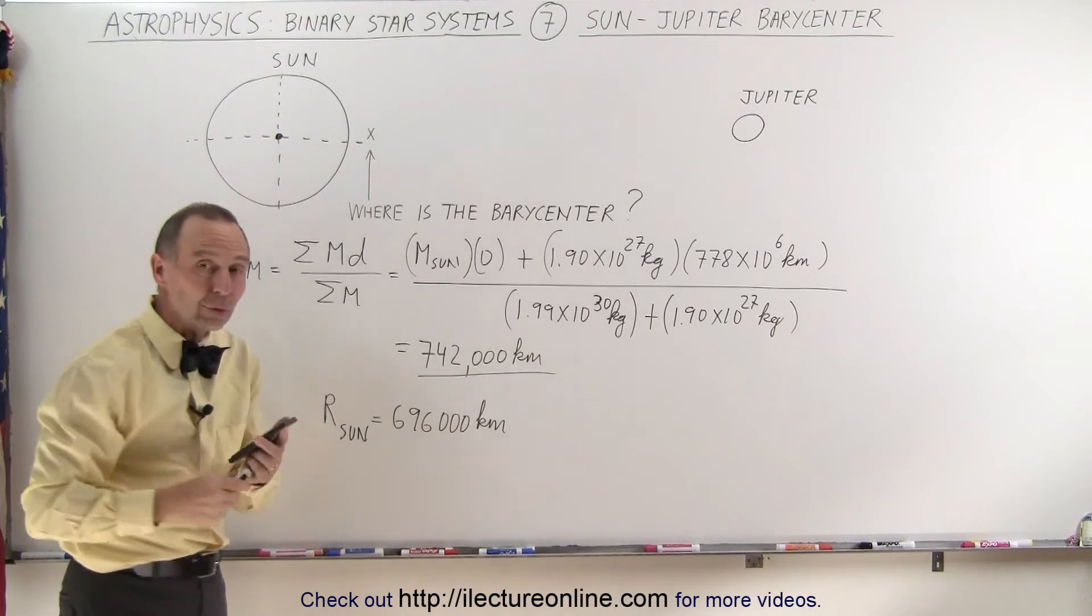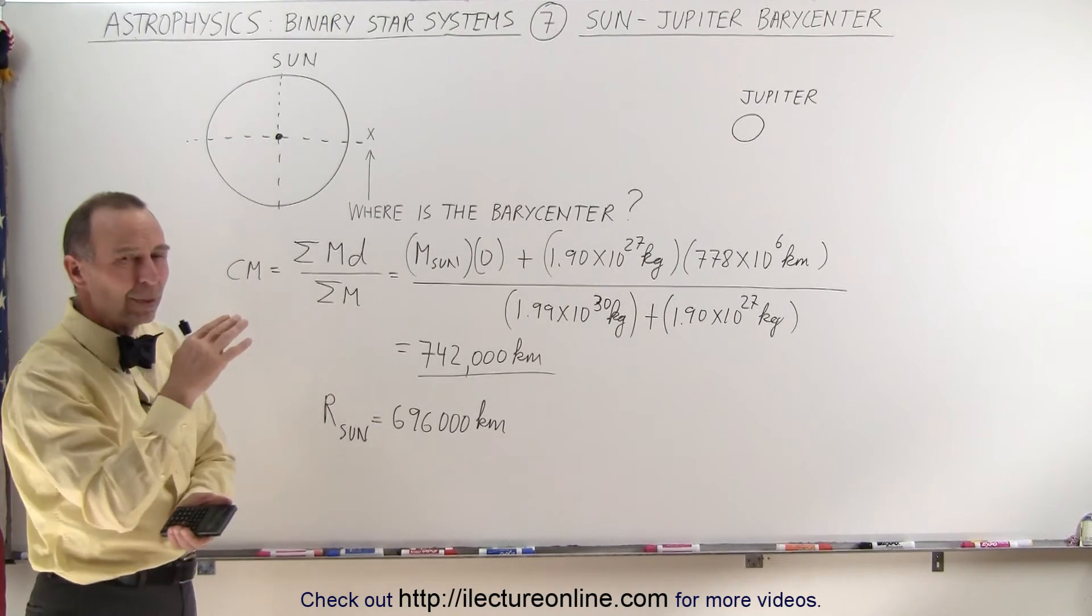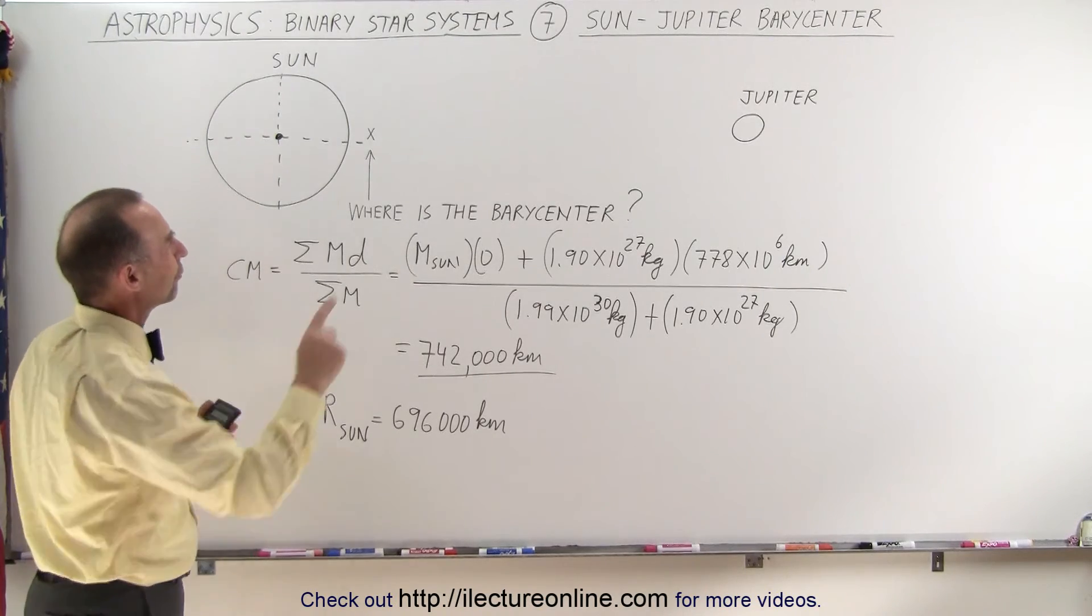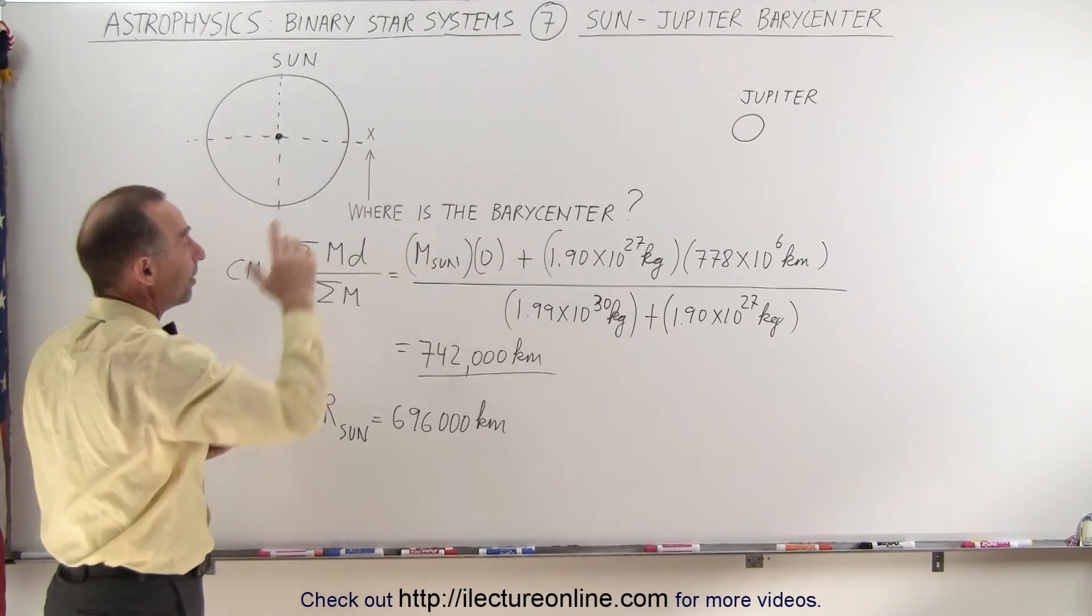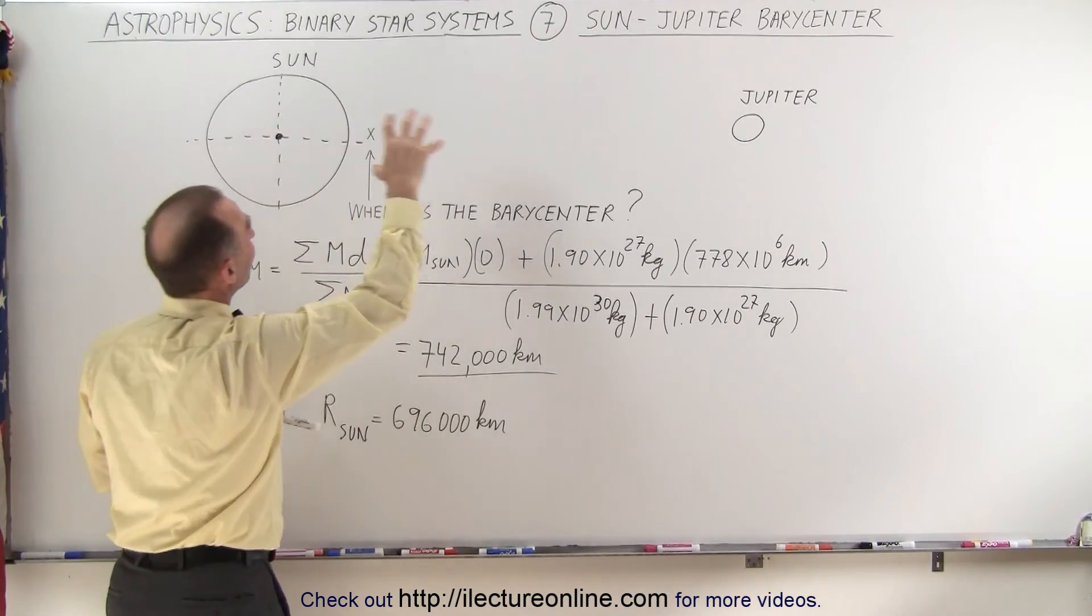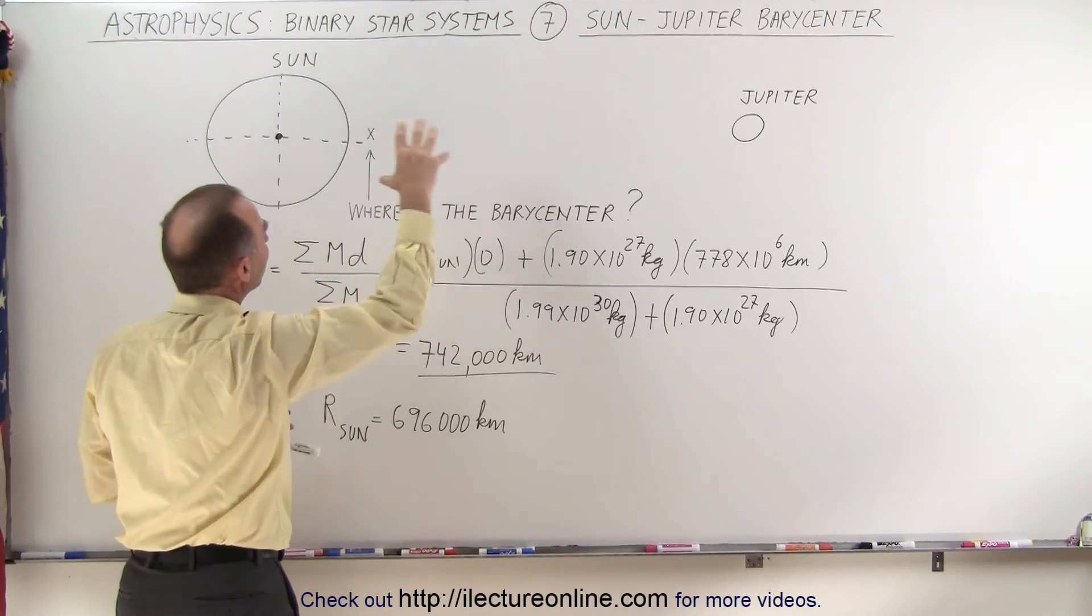As Jupiter goes around the Sun, it takes about 11.8 years or so for Jupiter to make one trip around the Sun, or essentially one trip around the barycenter, which means the Sun will wobble around the barycenter once every 11.8 years.